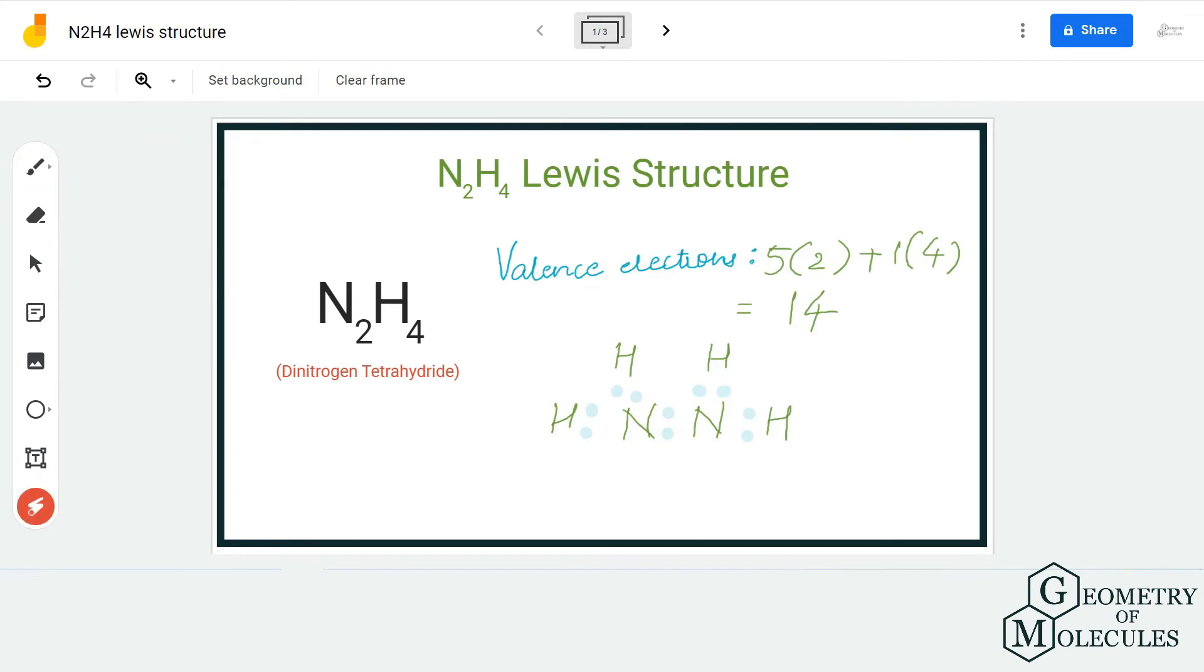Now if you have noticed, we have used 2, 4, 6, 8, 10 valence electrons out of 14, and we are just left with four more valence electrons. So all these four electrons will be placed around this nitrogen atom.